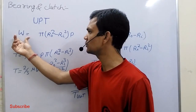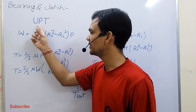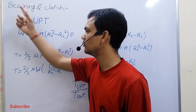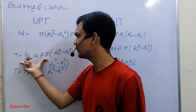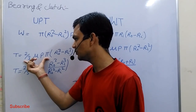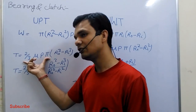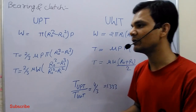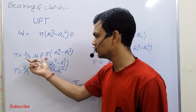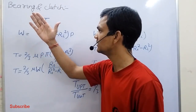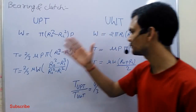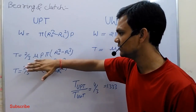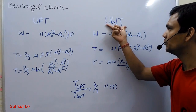If we design for the worst condition or peak load, then in normal condition it causes no problem. In the case of uniform pressure theory, the frictional torque is more, so there are more losses, more heat generation, and more power consumption. We design the bearing by uniform pressure theory to calculate how much power is consumed.